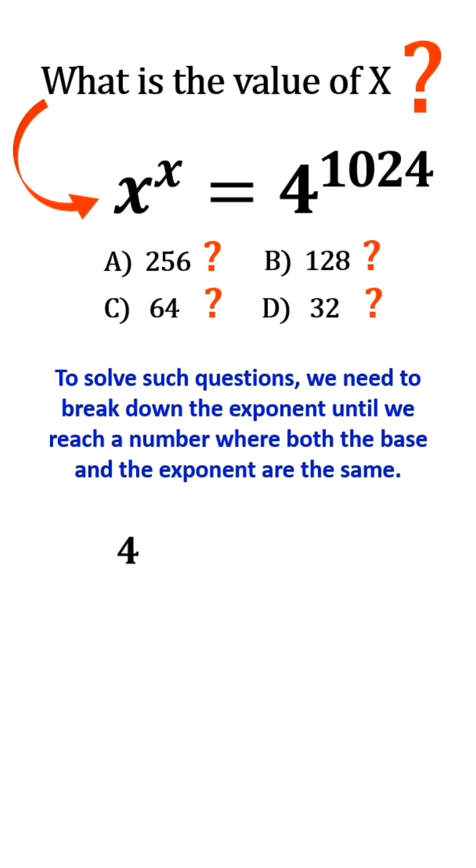For example, 4 to the power of 1024 equals 4 to the power of 2 times 512.